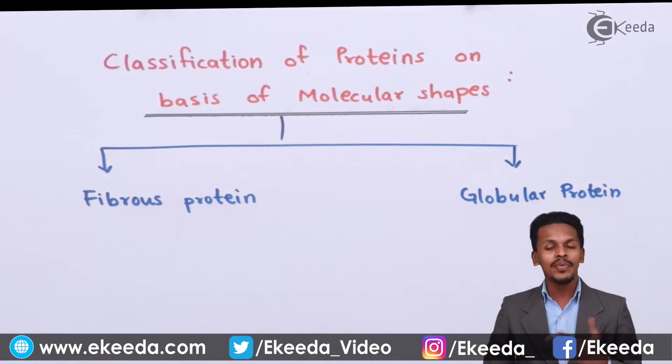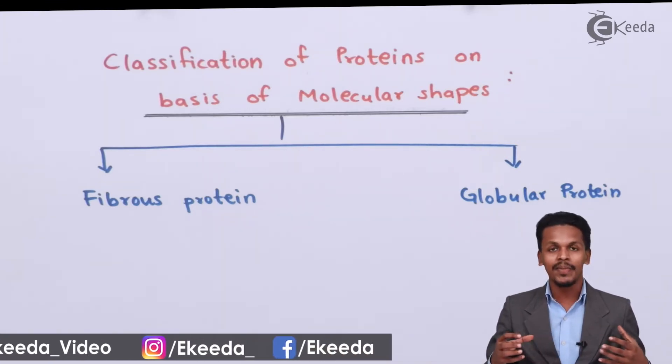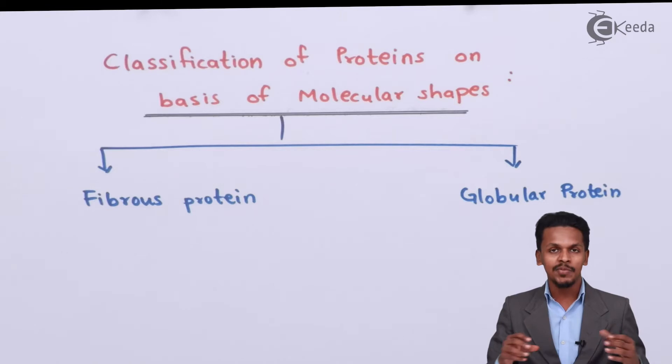What is the difference between these two? For fibrous proteins, we understand how a peptide linkage is formed. If there are multiple peptides arranged side by side parallelly like a fiber, those proteins are called fibrous proteins.